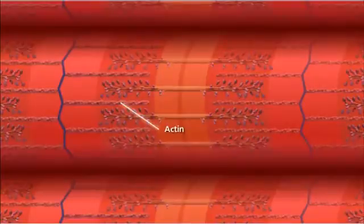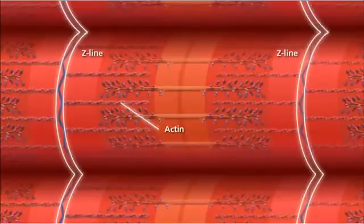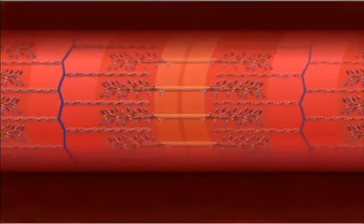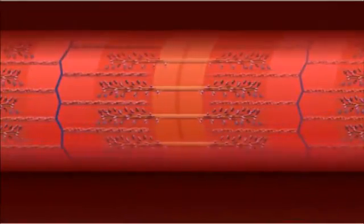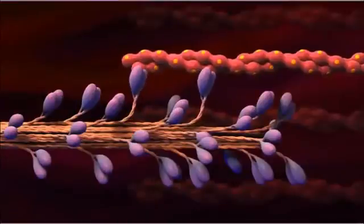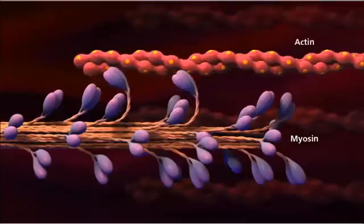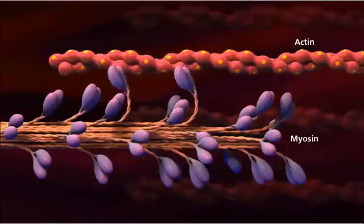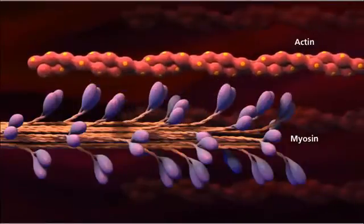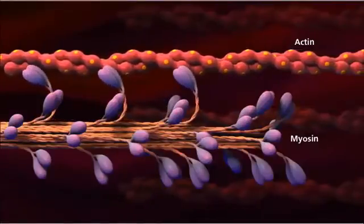The thin filaments are composed of the protein actin, which are anchored to the Z-lines on the outer edges of the sarcomere. Because the actin filaments are anchored to the Z-lines, the sarcomere shortens from both sides when actin filaments slide along the myosin filaments. Although the action between the filaments is described as sliding, the myosin filament actually pulls the actin along its length. The cross-bridges of the myosin filaments attach to the actin filaments and exert force on them to move.